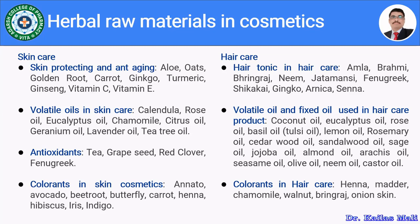Apart from vitamin C and vitamin E, we will discuss all the herbs related with their description and uses along with the chemical constituents. The volatile oils being used for skin care are calendula, rose oil, eucalyptus oil, chamomile, citrus oil, geranium oil, lavender oil and tea tree oil. The antioxidants used in skin formulation derived from herbs include tea, grape seed, red clover and fenugreek.